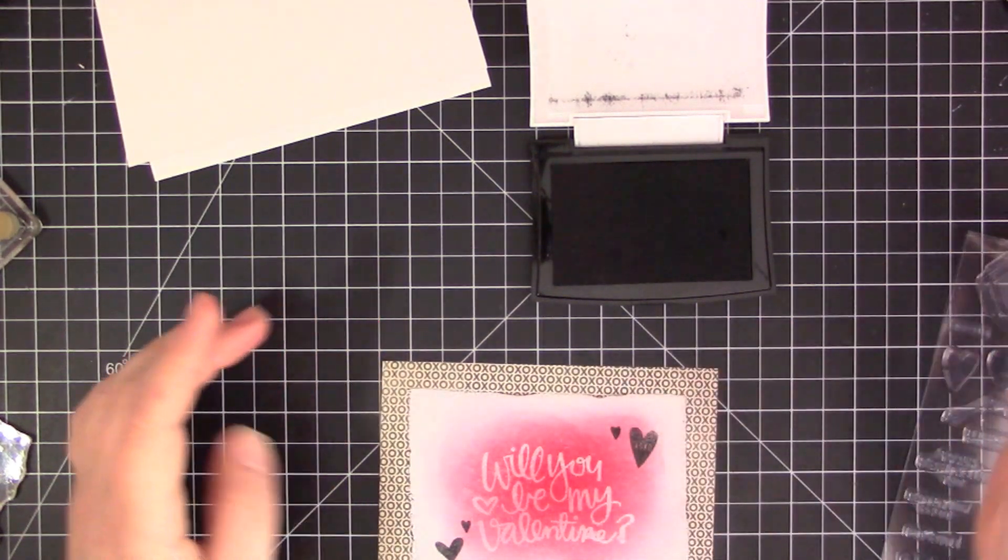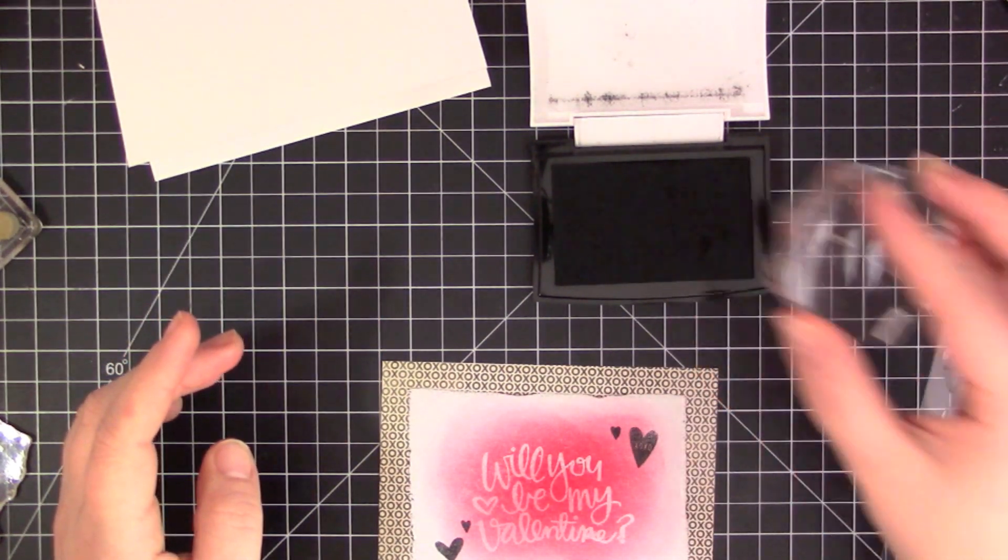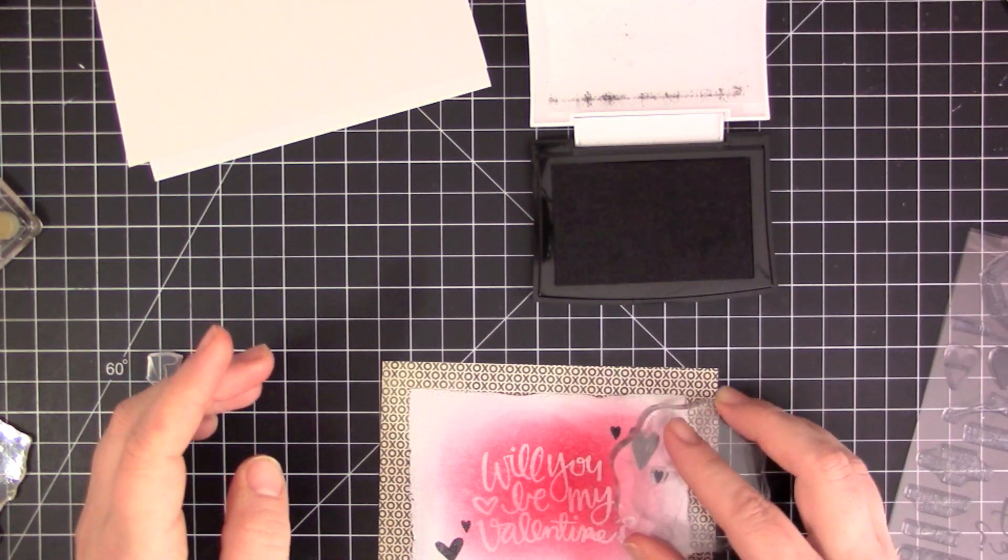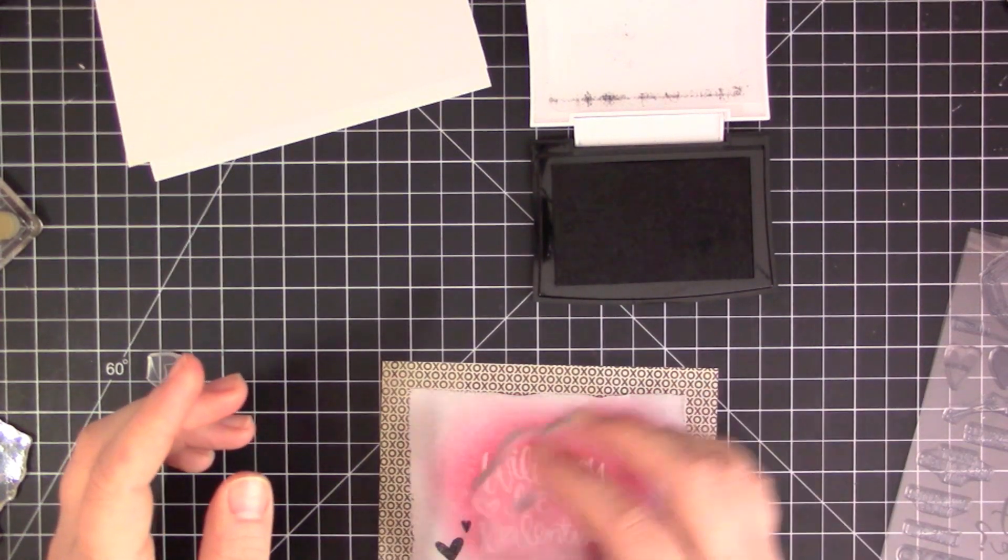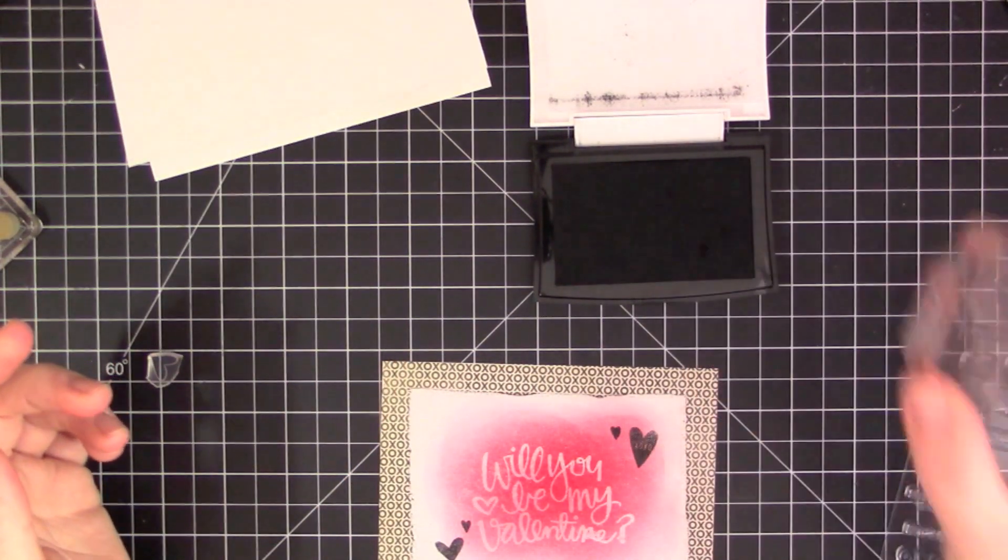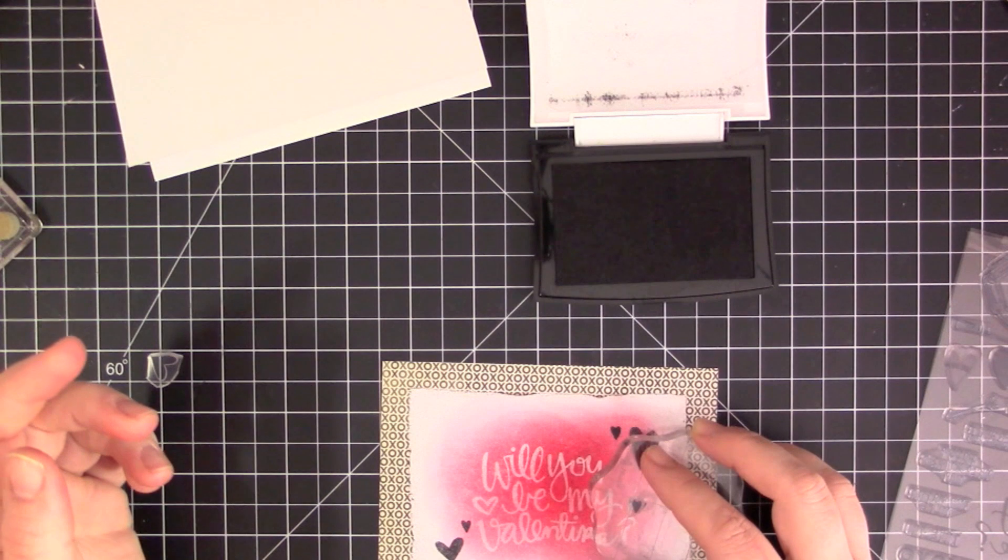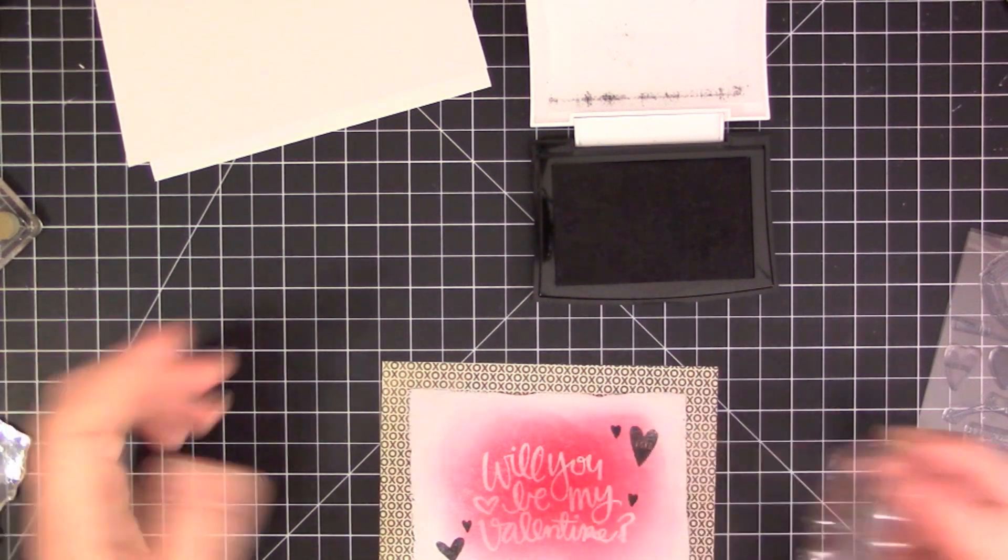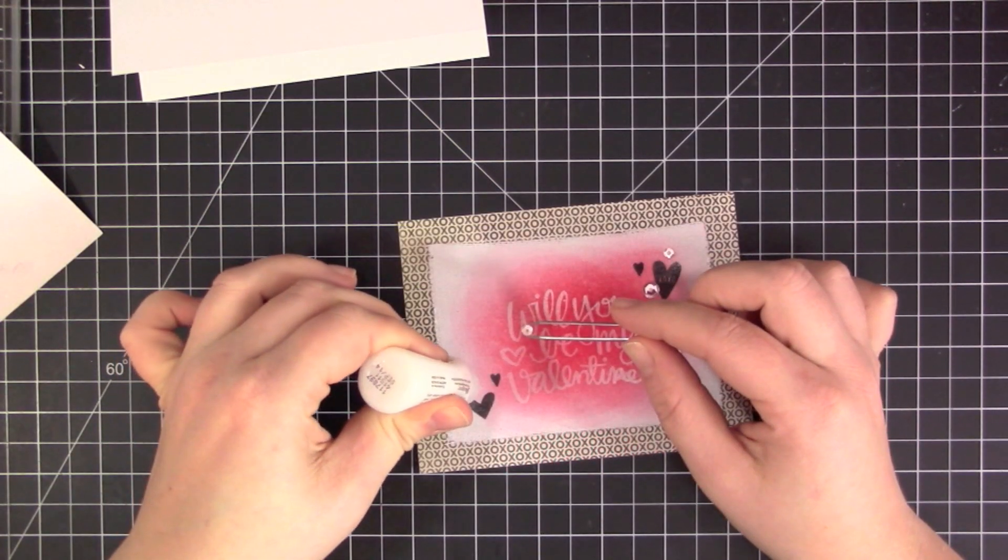I'm using the black VersaFine ink once again to stamp those little hearts all over the canvas piece on my card. I did a visual triangle—a couple in the top corner, a couple in the bottom corner, and then one in the center area beside that sentiment.